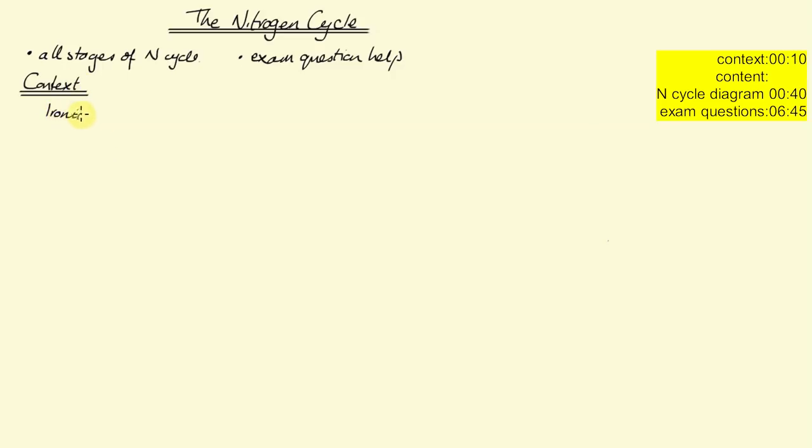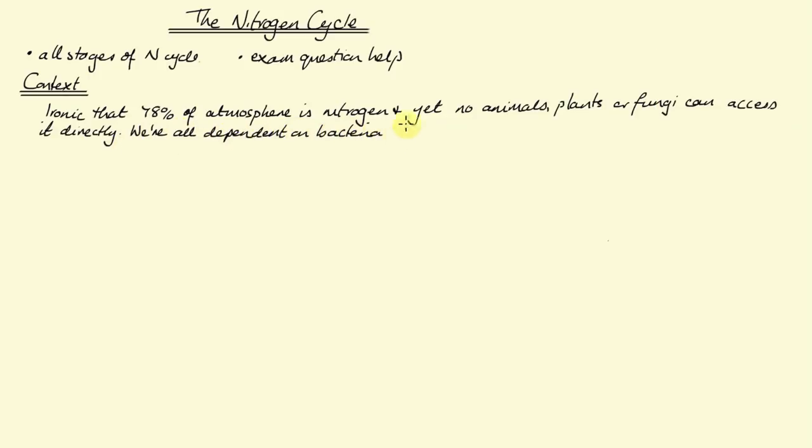A bit of context: it is kind of ironic that 78% of our atmosphere is made up of nitrogen gas and yet no animal, plant or fungus can access that nitrogen to use it to make proteins and nucleic acids. We are all dependent on bacteria to get it into every food chain on the planet. So let's see how that happens.